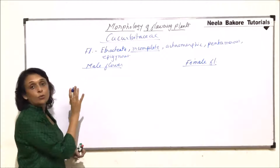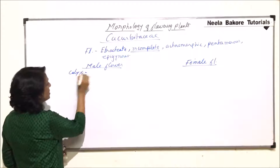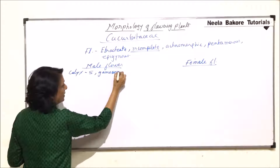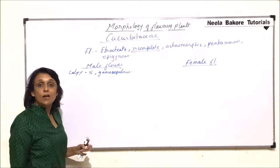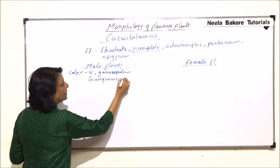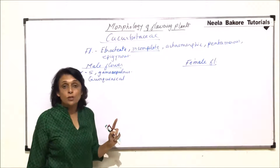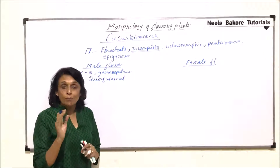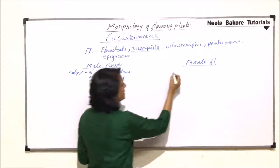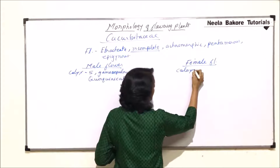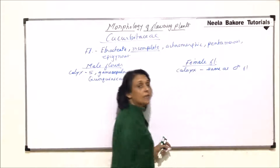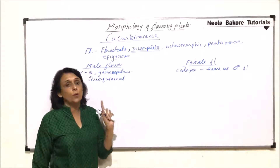Now for some unique features: the calyx has five sepals and they are gamosepalous, meaning the five sepals are fused. The aestivation is quincuncial — two sepals are completely out, two sepals are completely in, and one sepal is partly in and partly out. This is the same for both male and female flowers.